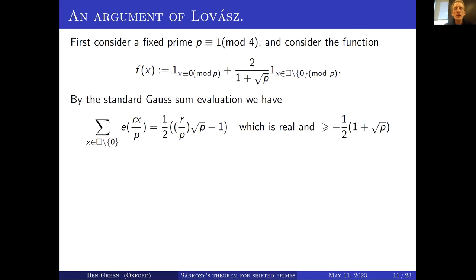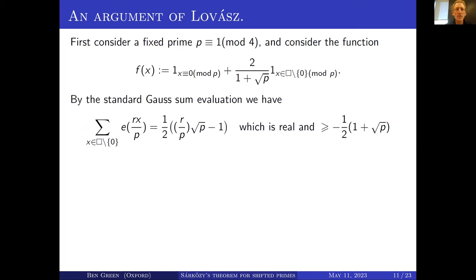You can compute the discrete Fourier transform of this function. What I've written is basically the discrete Fourier transform of the nonzero squares: here E(t) means e^{2πit} as usual. This is basically just a Gauss sum evaluation, and what you can compute is that the value is (1/2) times (Legendre symbol r/p) times √p minus 1.